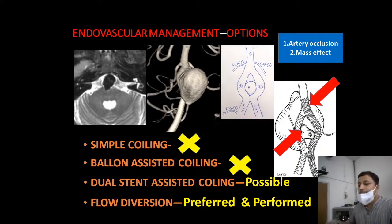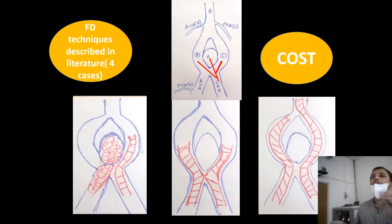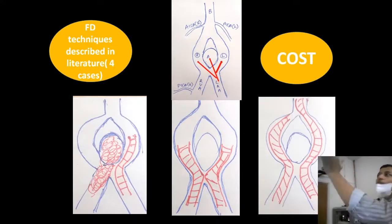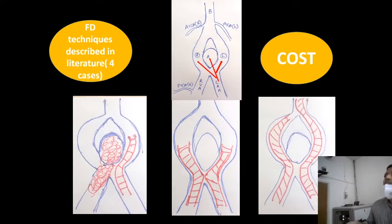We reviewed the literature and found only 4 reported cases of this type of aneurysm managed with a flow diverter. To understand the approach, we analyzed the hemodynamics: from both vertebral arteries, there are 6 arterial jets converging at the vertebrobasilar junction filling the aneurysm. We need to eliminate the inflow jets from both sides. Three techniques are described in the literature: placing a flow diverter from the left side through the left limb and occluding the right vertebral artery; or placing a flow diverter from the left vertebral artery to the left limb with extension into the basilar artery, among others.